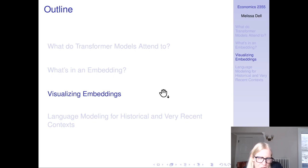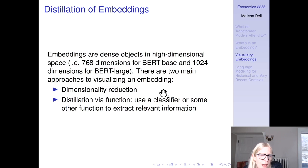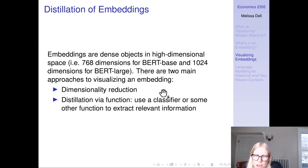Visualizing embeddings: embeddings are dense objects. With BERT base they're 768 dimensions; with BERT large there are 1024 dimensions. There are two main approaches to visualizing an embedding. Obviously we can't visualize a vector in 768 or 1024 dimensional space, so we can reduce the dimensions down to two or three and visualize them, or we can use a classifier or some other function to extract relevant information and then visualize that.